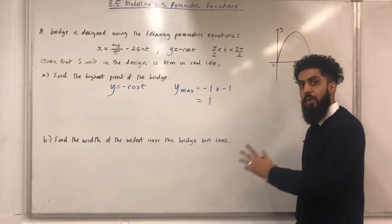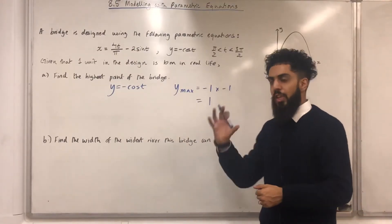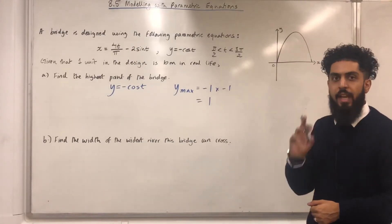Now, one unit in the design represents 10 meters in real life. So the highest point of the bridge will just be 1 times 10, which is 10 meters.